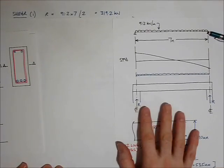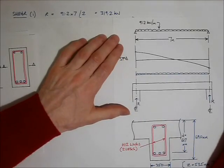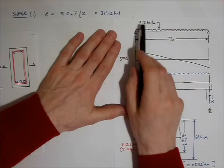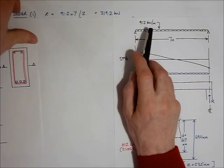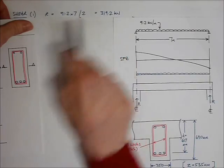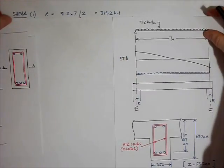So the first thing I want to do is I want to work out the reaction. So the reaction for this beam, 7 metres long, 91.2 kN/m UDL. The reaction, 91.2 times 7 divided by 2, 319 kN, that's it.